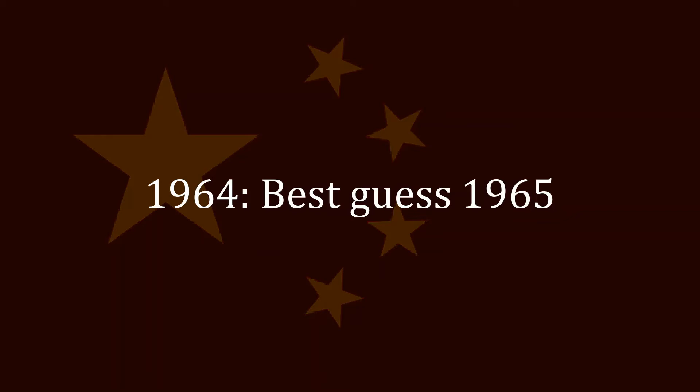There was a similar problem with China, albeit not as bad. In 1964, the US's best guess on a Chinese nuclear weapon would be 1965. But once again, the actual date of proliferation occurred in the year of that estimate — 1964.